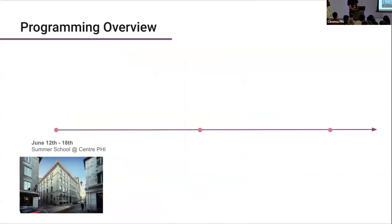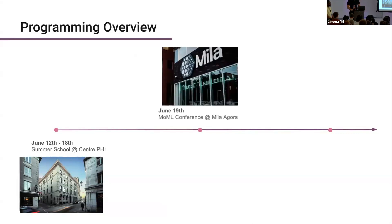Thank you, Prudenzio. Welcome everybody to the summer school. My name's Johnny, and I've been working really closely with Prudenzio to organize the summer school. It's the first time we're doing something like this in Montreal, so we hope you all enjoy the programming. Just to give a quick overview: the first five days will be scheduled classes from the 12th to the 18th, happening in this building here at Saint-Trofi. Next week on the 19th, we'll be doing a single-day conference — the Molecular Machine Learning Conference.